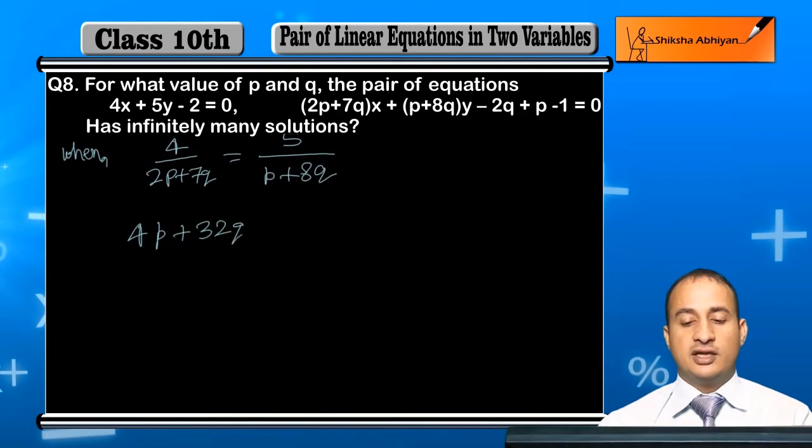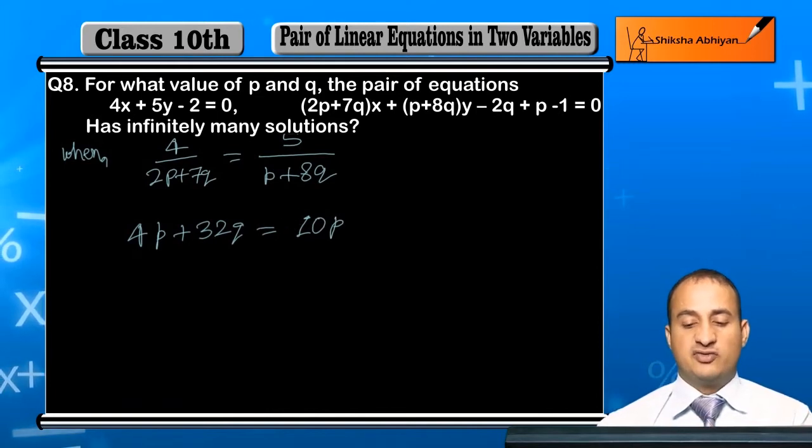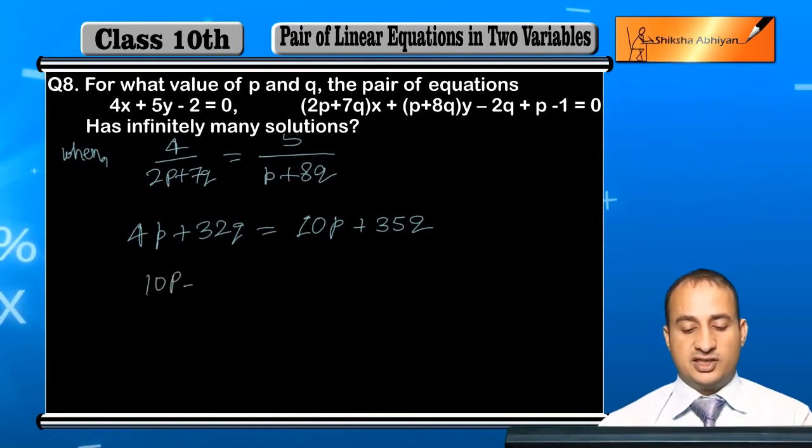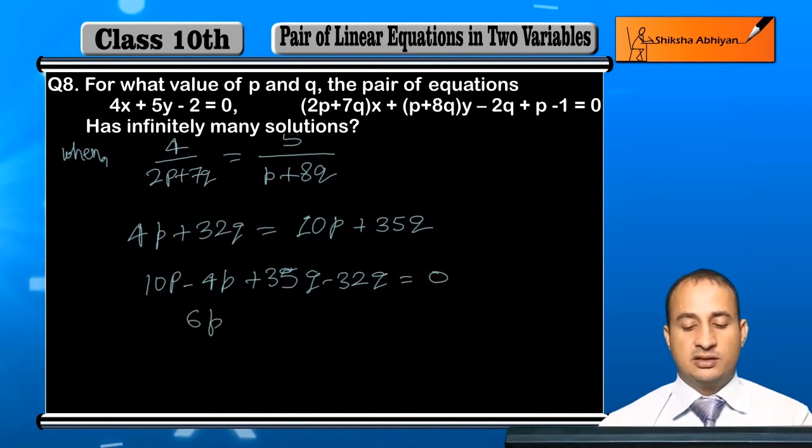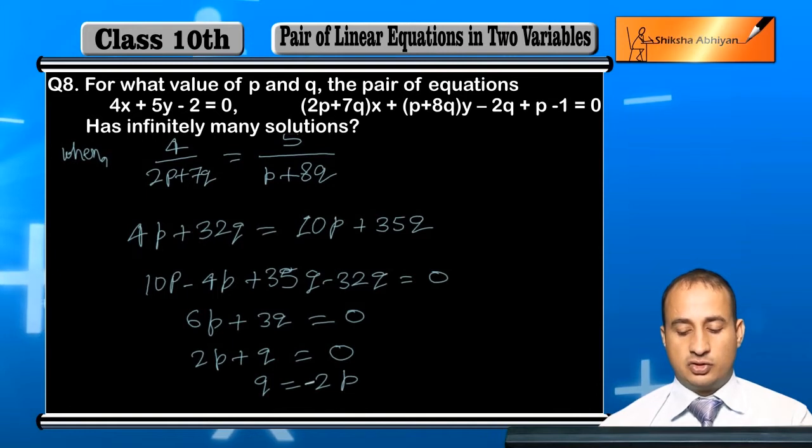4 times p plus 8q gives 4P plus 32Q. And 5 times 2p plus 7q gives 10P plus 35Q. Moving to left and right: 10P minus 4P plus 32Q minus 35Q equal to 0. That is 6P minus 3Q equal to 0. Taking 3 common: 2P plus Q equal to 0. From here, Q is equal to minus 2P.